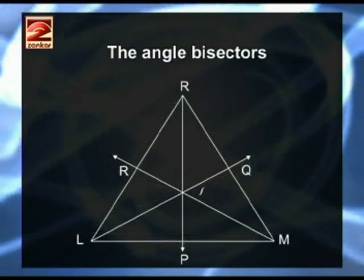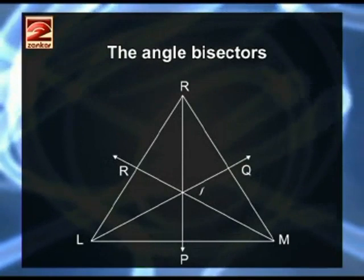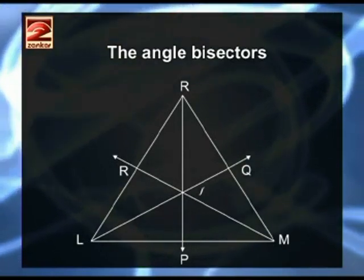Next property, the Angle Bisectors. The three angle bisectors of a triangle are concurrent.